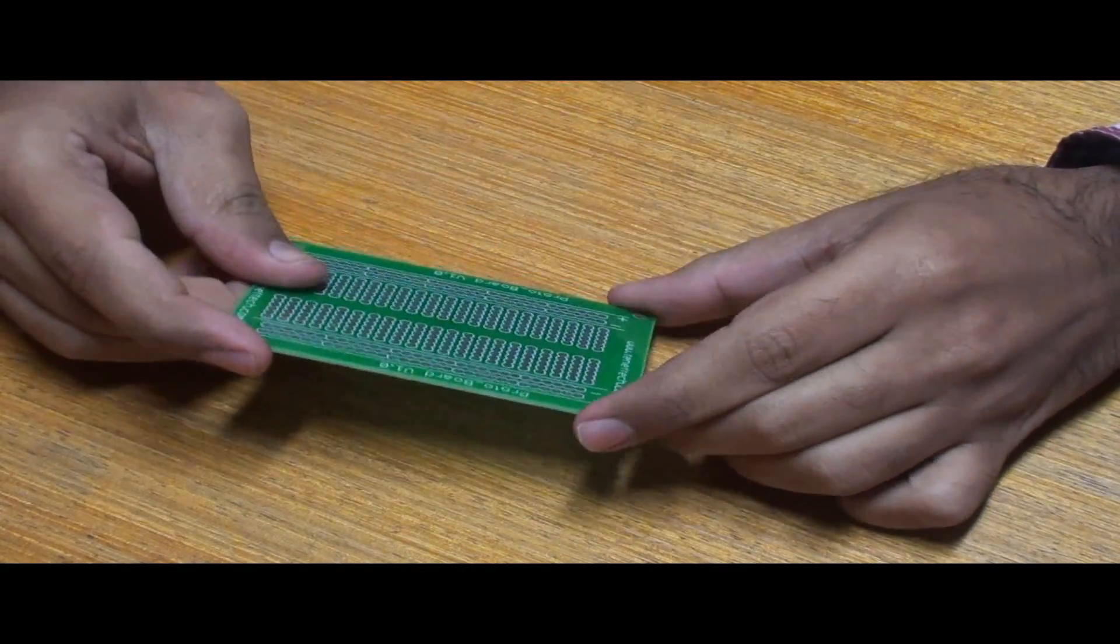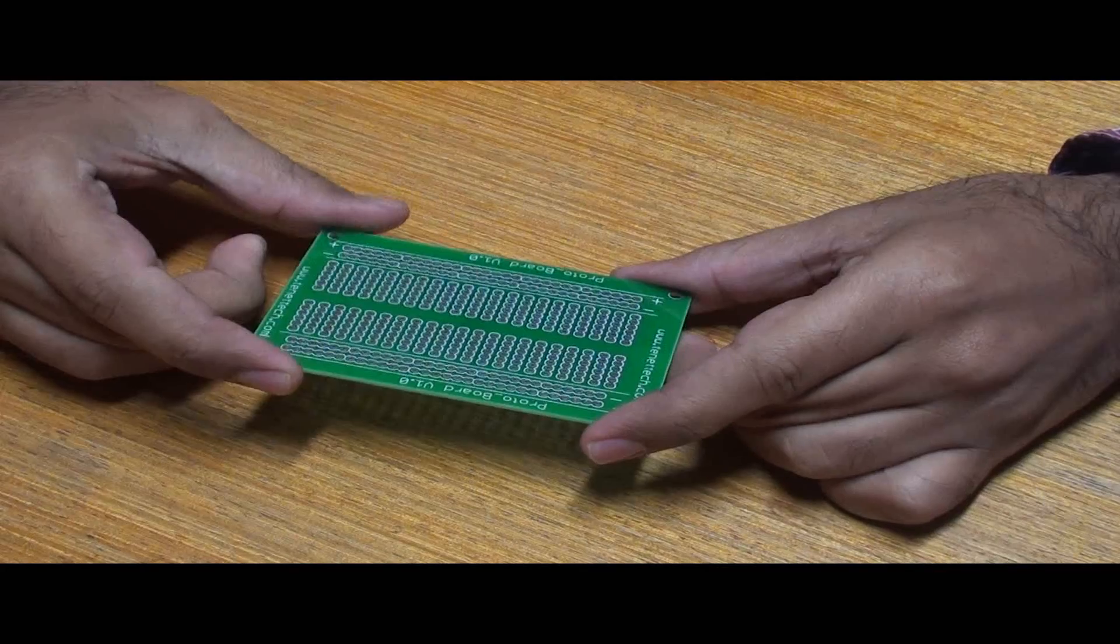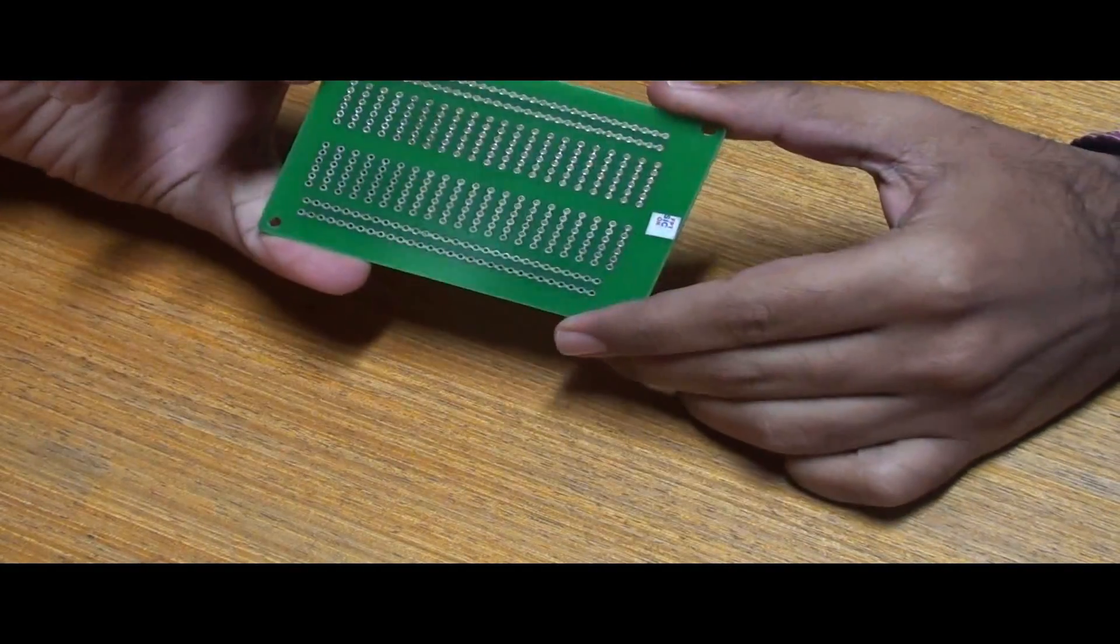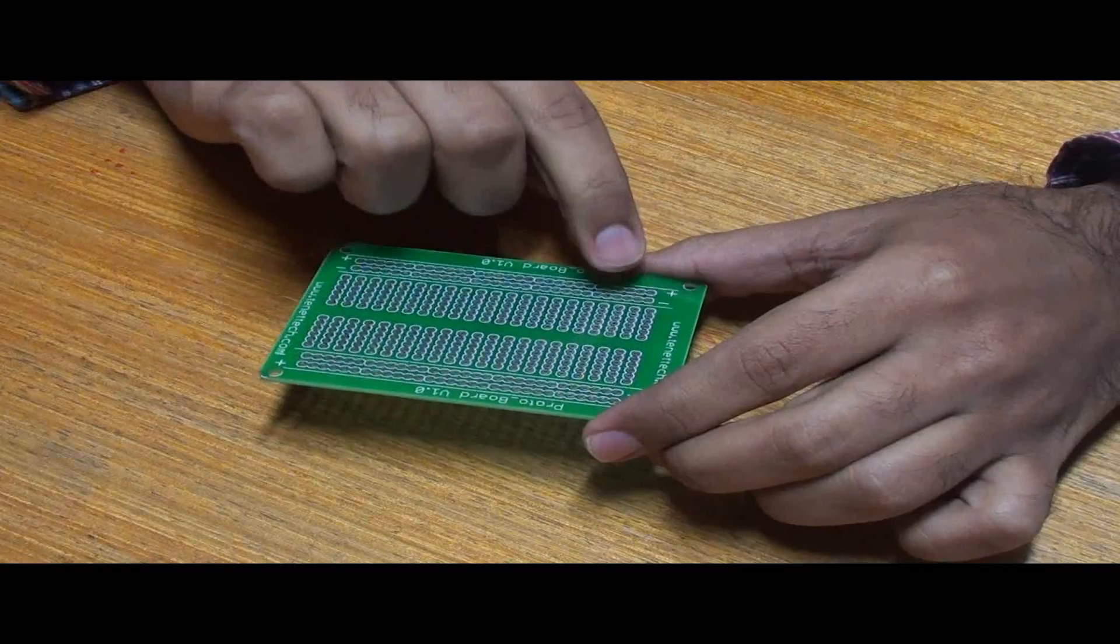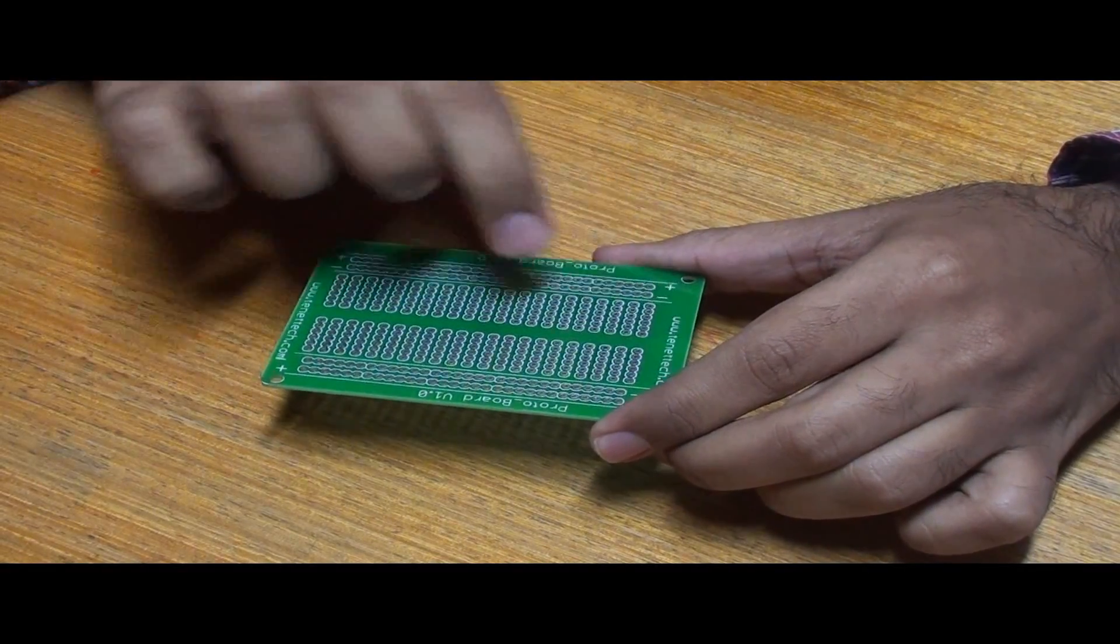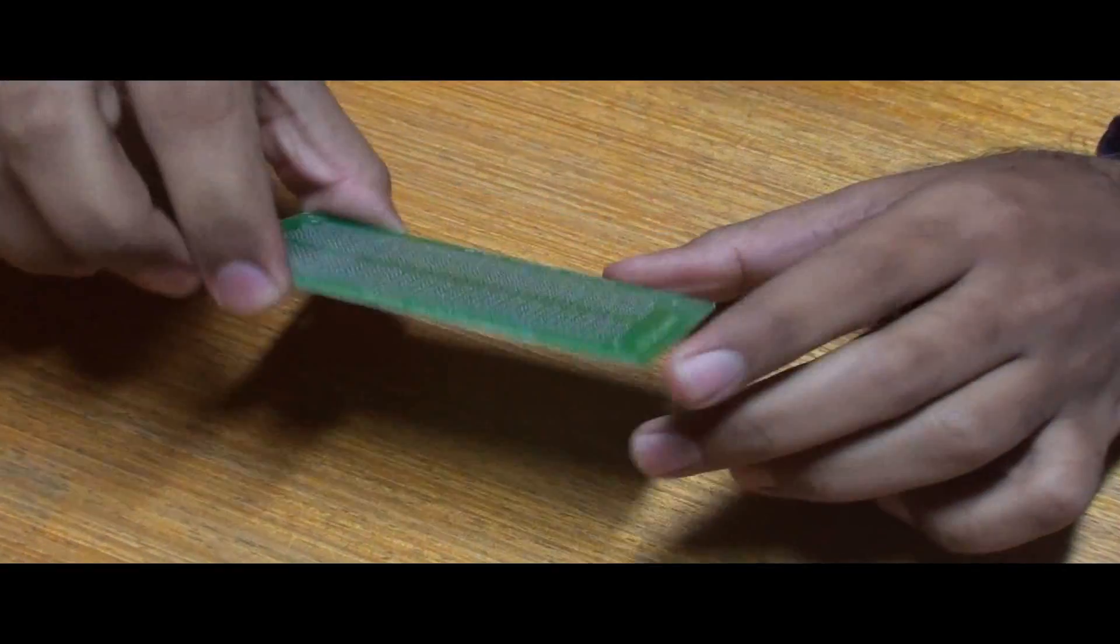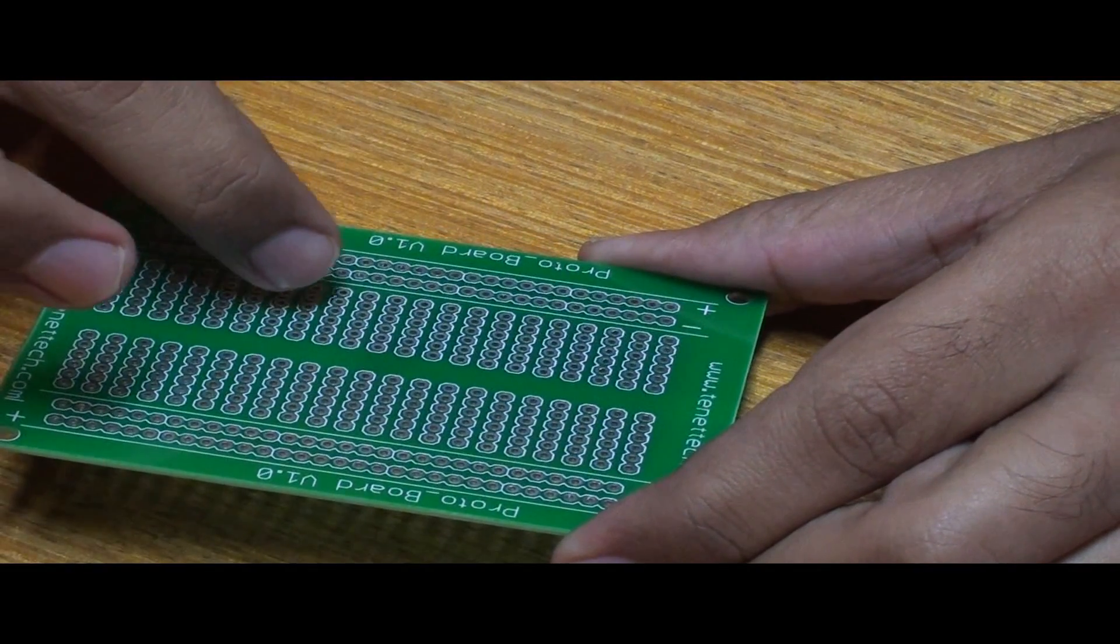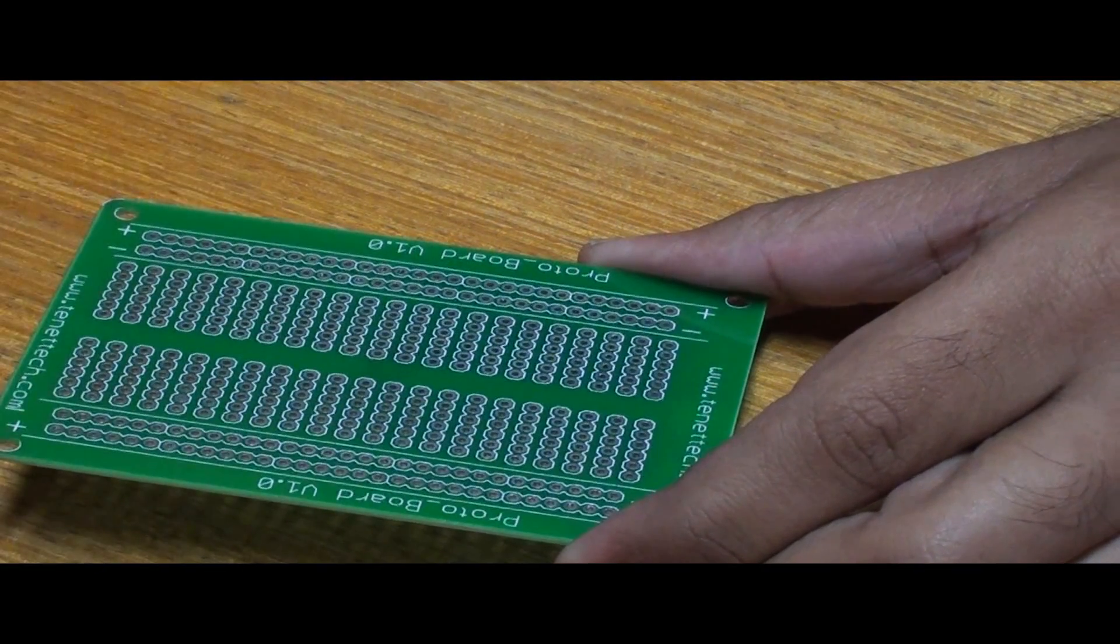So the connections are almost similar to a breadboard. As you can see here, the vertical lines are all internally connected, and the power and ground are also internally connected. So we can just connect it here and later on if you want we can solder it and just use it as a normal PCB.